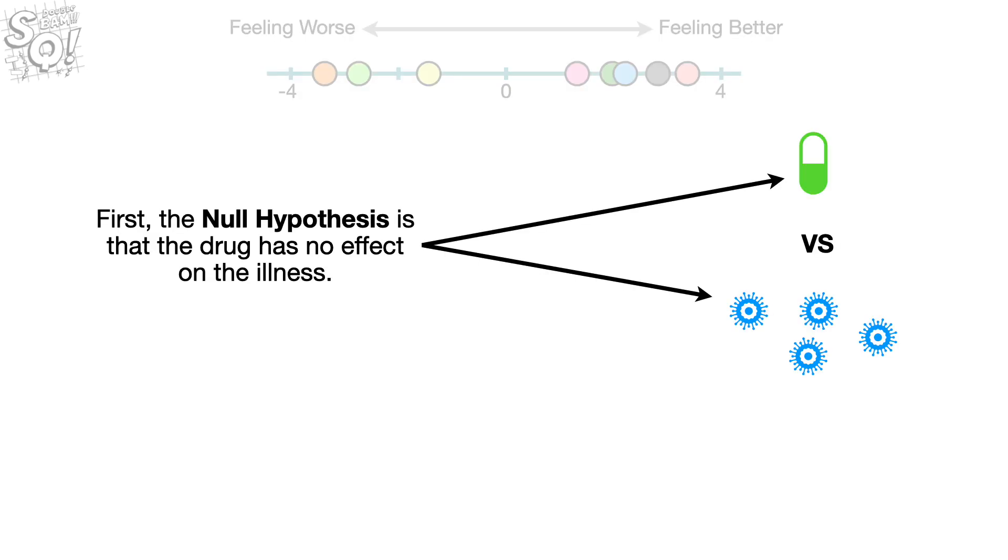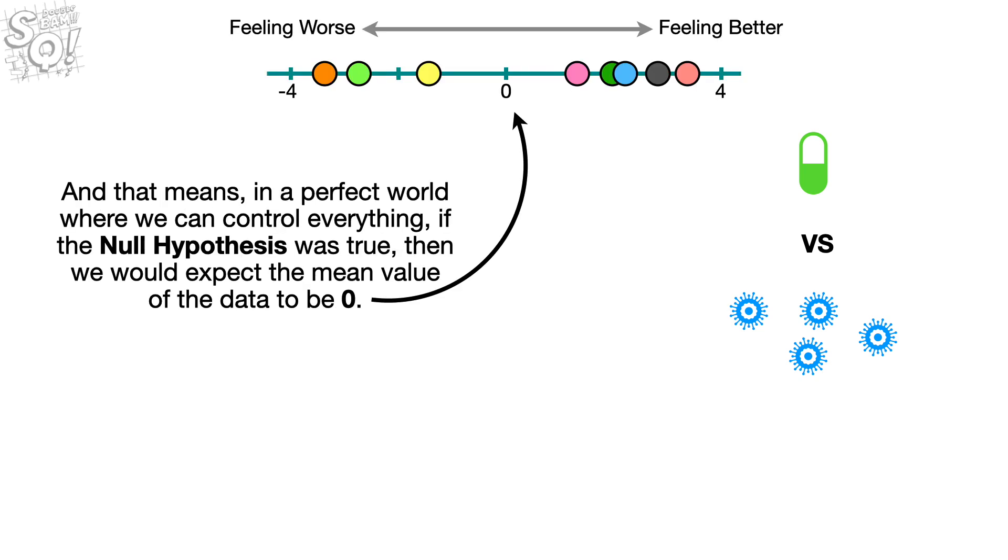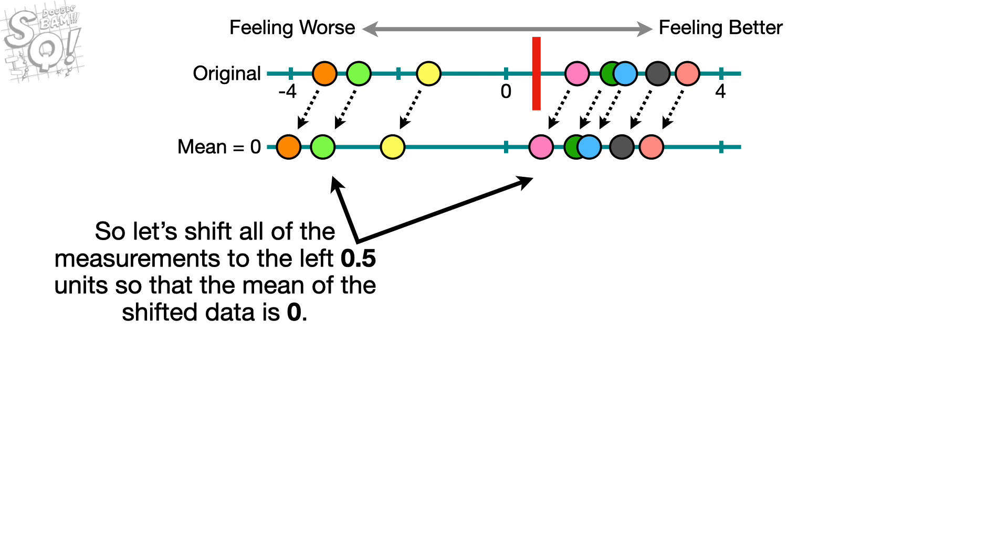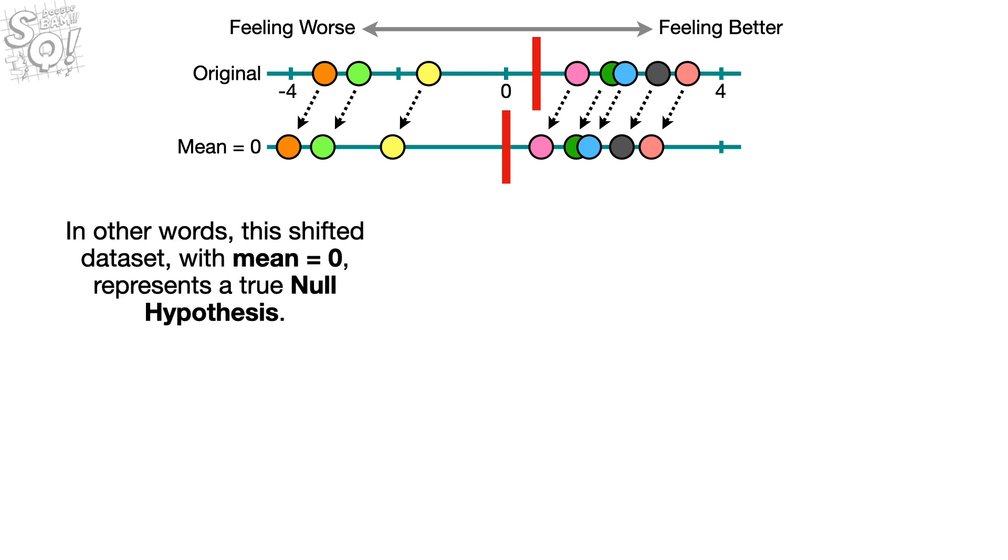First, the null hypothesis is that the drug has no effect on the illness. And that means, in a perfect world where we can control everything, if the null hypothesis was true, then we would expect the mean value of the data to be zero. However, when we calculate the mean, we get 0.5. So let's shift all of the measurements to the left 0.5 units so that the mean of the shifted data is zero. In other words, this shifted data set with mean equal to zero represents a true null hypothesis.